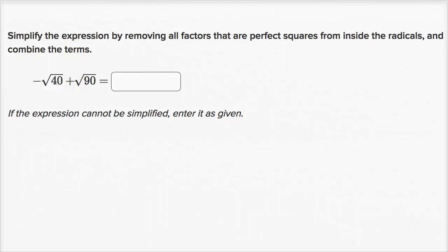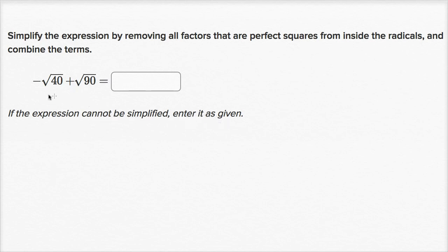Let's get some practice rewriting and simplifying radical expressions. So in this first exercise, and these are all from Khan Academy, it says simplify the expression by removing all factors that are perfect squares from inside the radicals and combine the terms. If the expression cannot be simplified, enter it as given. All right, let's see what we can do here.